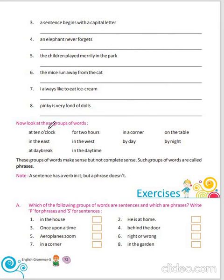Now, look at these groups of words: 'and ten o'clock for two hours.' These groups of words make sense but not complete sense. So, we call them phrases. We can say that a sentence has a verb in it, but a phrase does not.